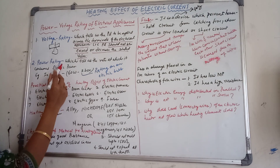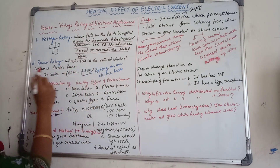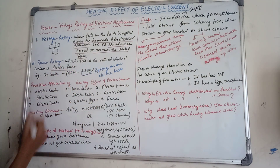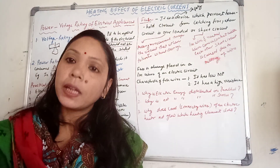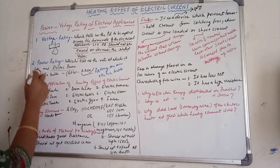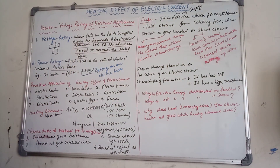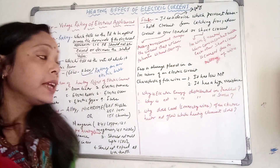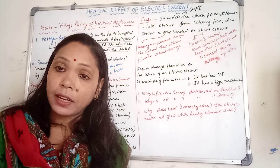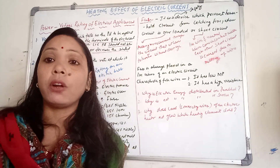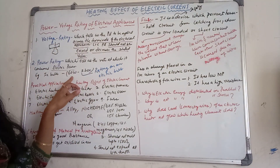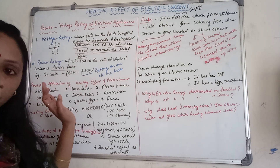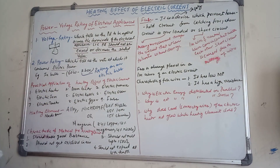Next is your power rating. Power rating tells us the rate at which it consumes electric power — how much power is going to be consumed. That is your power rating. If you see any electrical appliance — TV, refrigerator, oven — any appliance is always mentioned with this rating: watt and voltage.